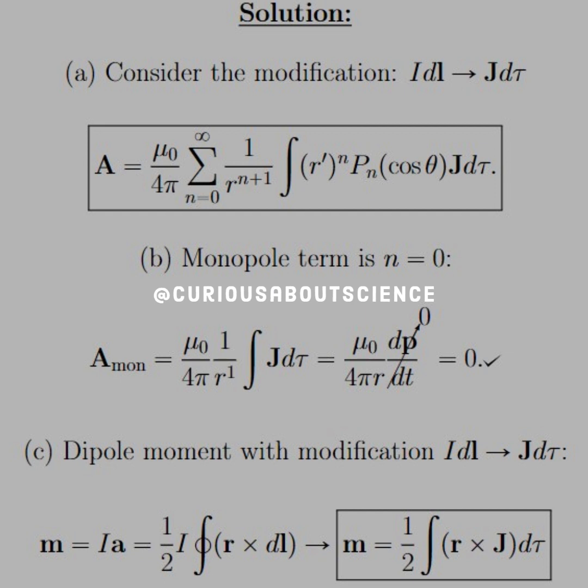So finally, moving on to part C, we see that the dipole moment with the same modification we used in A, if we have M equal IA, and that's equal to one-half I, the closed integral R cross DL, with this modification, we can say that M is equal to one-half integral R cross J D tau. Pretty straightforward, but seeing that come together with part B was really nice.